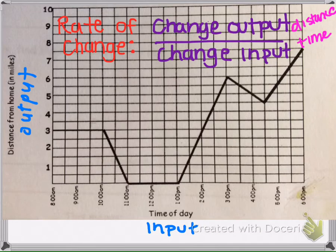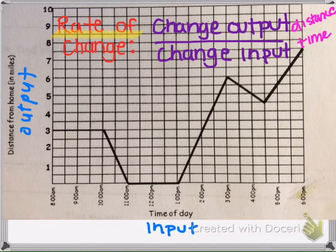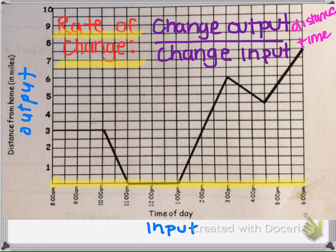The following graph shows the number of miles from home a child is on Saturday. Use the graph to find the rate of change in miles per hour for each interval and explain the meaning of each rate of change in a sentence. To review, rate of change is the amount of change in your output variable over the amount of change in your input variable. The input variable is always on the horizontal axis and the output variable is always on the vertical axis. So we're going to find the change in distance over the change in time.